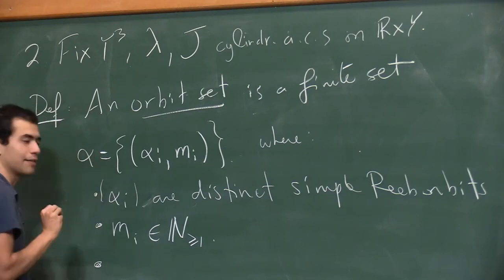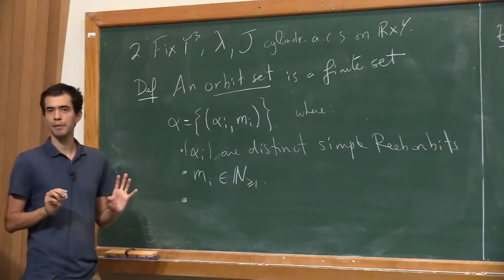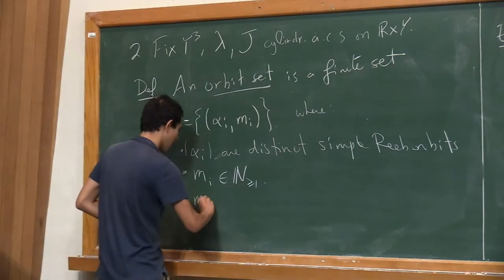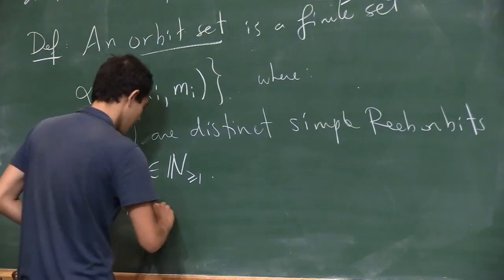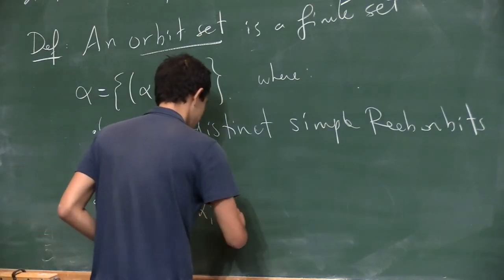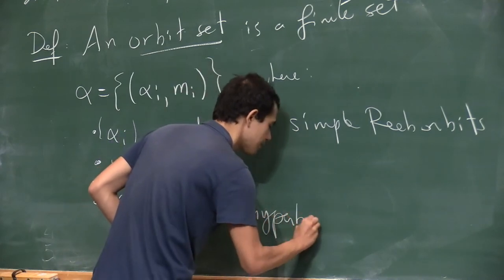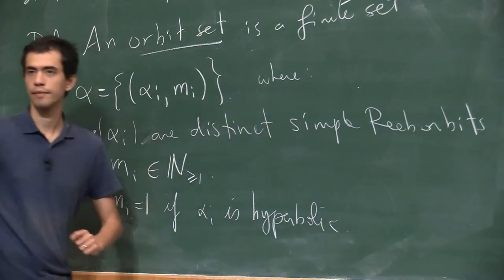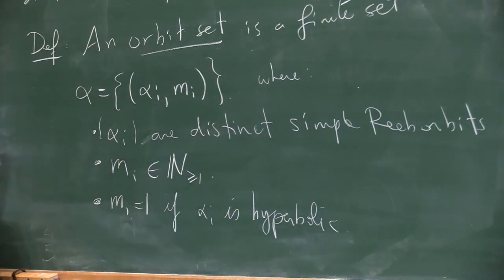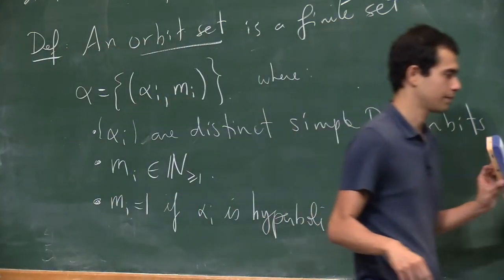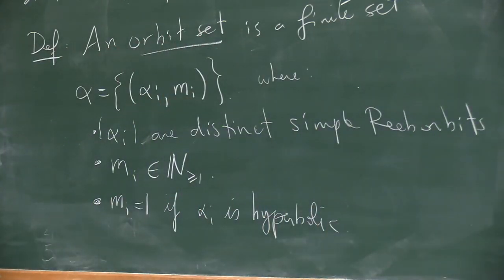There is a technical condition: m_i equals one if α_i is hyperbolic. This condition is important for things to work out — for D² = 0 — but I won't explain why today.